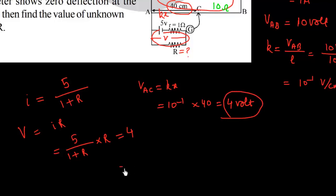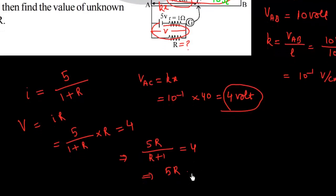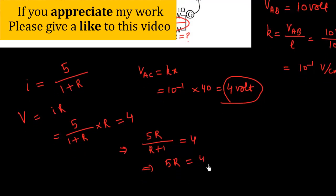We have to find the value of R. So 5R upon R plus 1 equals 4. That gives 5R equals 4R plus 4, so R equals 4 ohm.